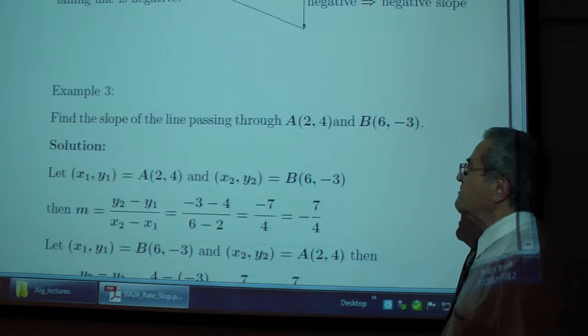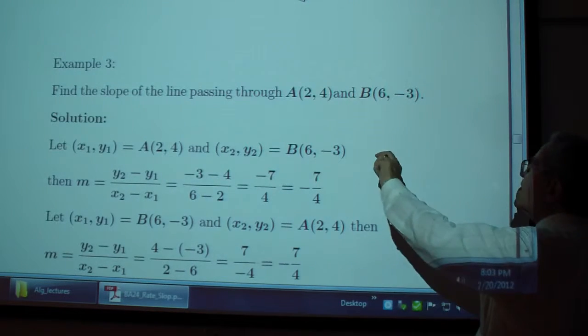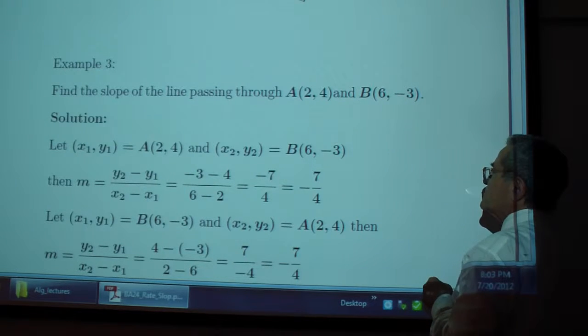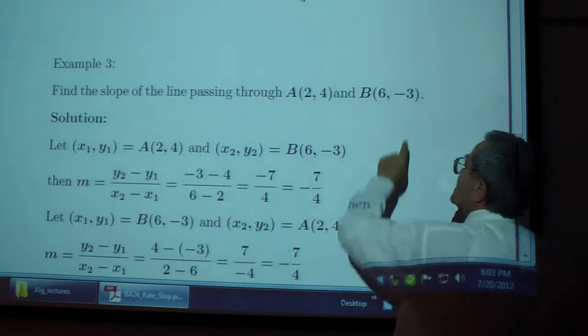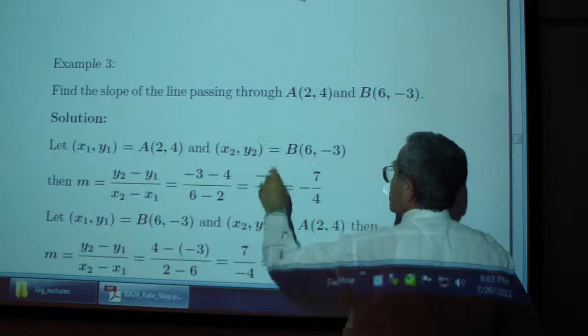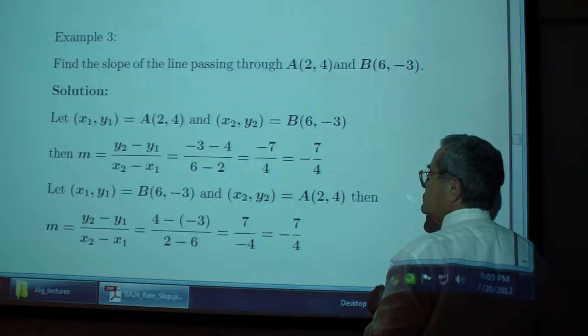Okay, example 3. Find the slope of the line passing through A(2, 4) and B(6, -3). So, I could say -3 minus 4 over 6 minus 2, which gives me -7 over 4.